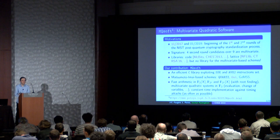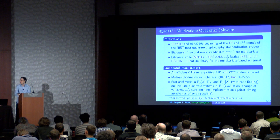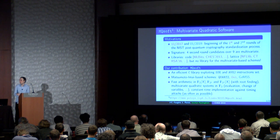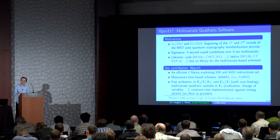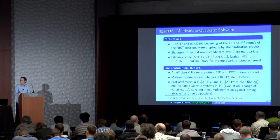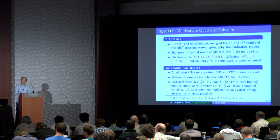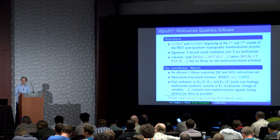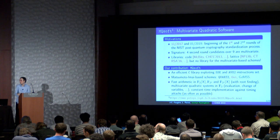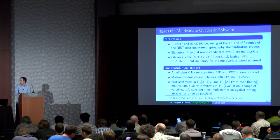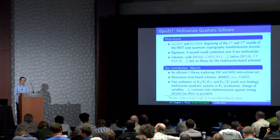In particular, we have implementations of Matsumoto-Imai-based schemes. For example, we have Quartz, GUI, and GEMS. GUI is the candidate at the first round of the competition, and GEMS is at the second round of the NIST competition. For Quartz, in 2001 there was a NESSIE competition, which is a European competition, for which Quartz was submitted. We also have a generic application.